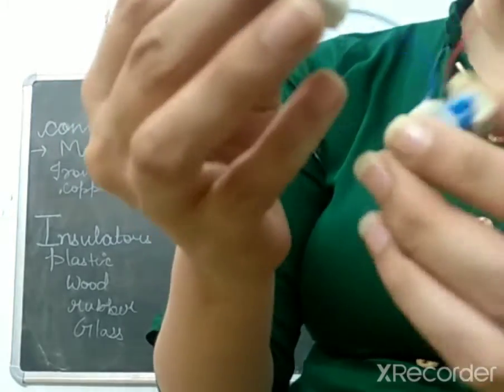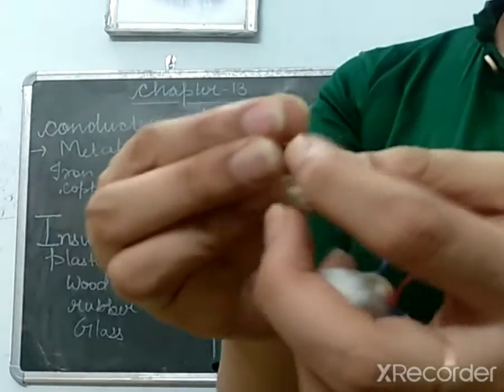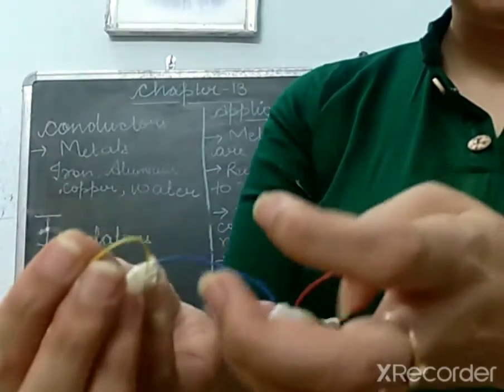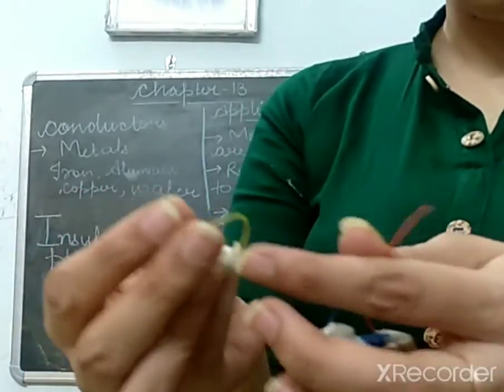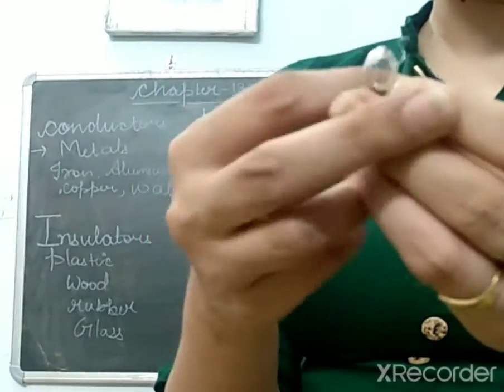cell with two contact wires and I have a small bulb. And I have this wire. This wire is made up of metal. It's a metallic wire. And I need to find whether it's a conductor or an insulator.